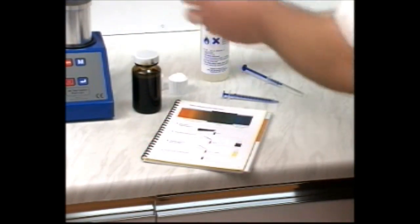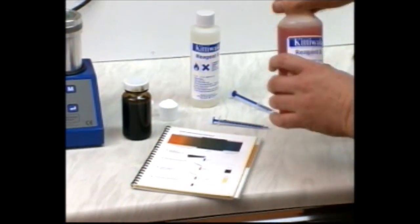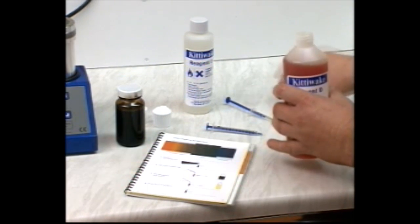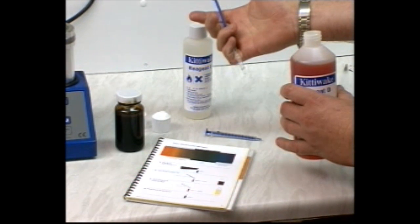Take the bottle of reagent D, which should be a blue-green color. If it is red, add reagent E one drop at a time, holding the syringe like this, until it just turns green.